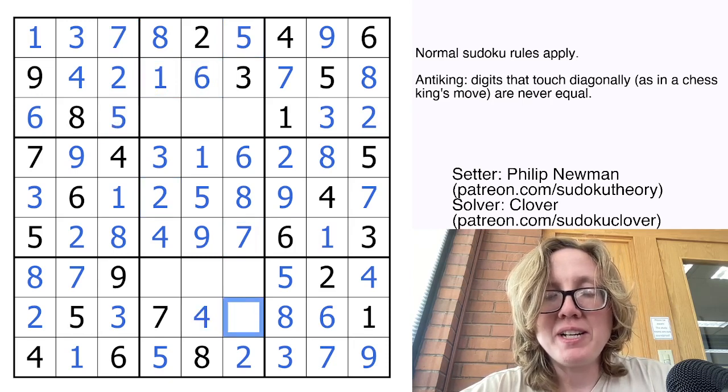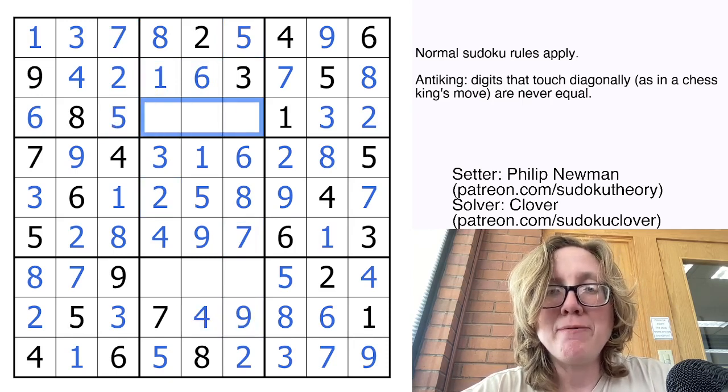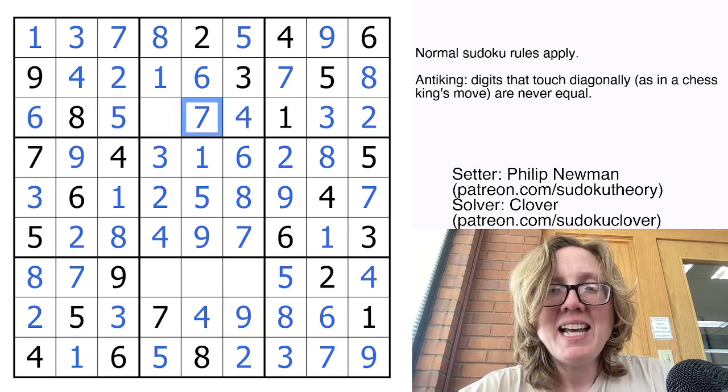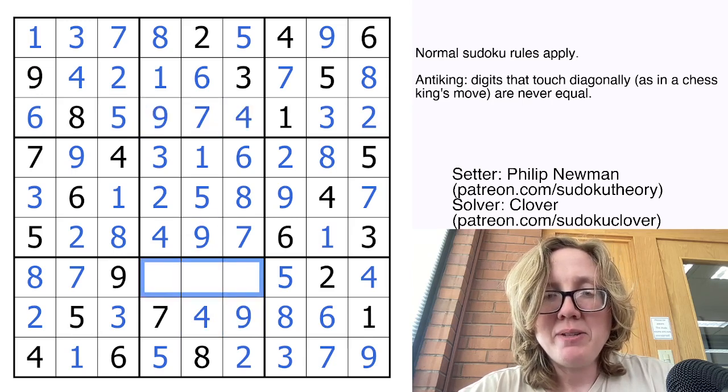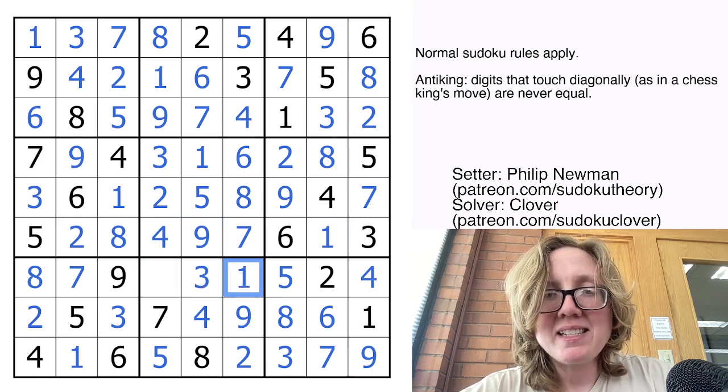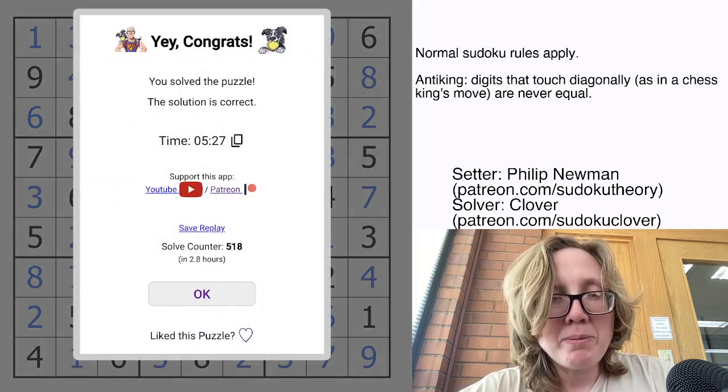We need 4, 7, and 9. And by Sudoku we know where they go now. And we need 1, 3, and 6. And that's where we put those.